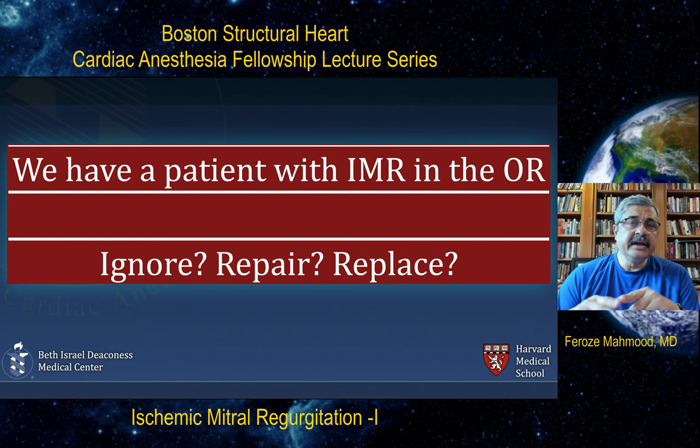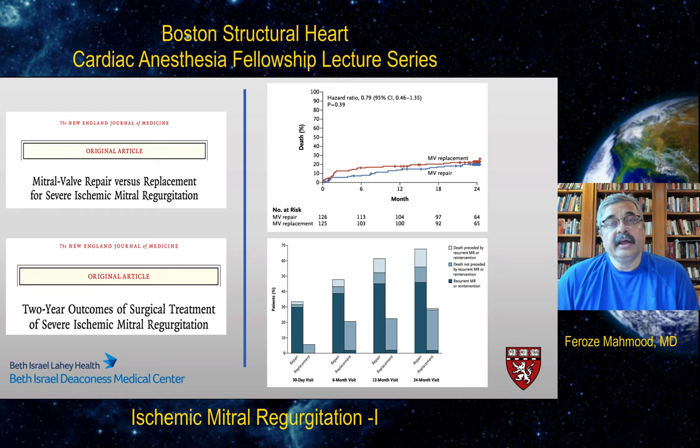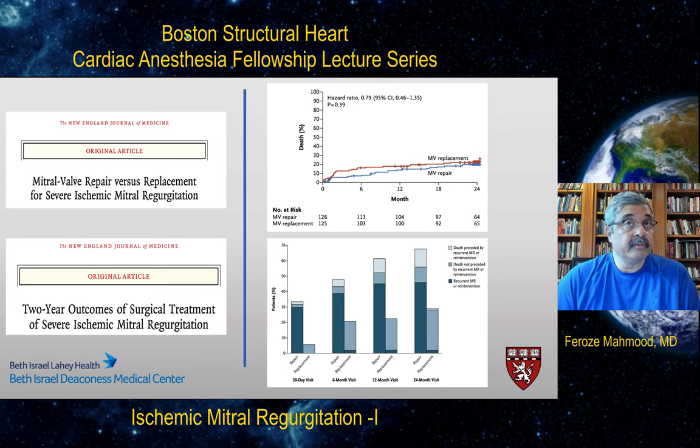This longstanding clinical conundrum was addressed in a trial of 250 patients in a multicentric, randomized fashion — patients equally matched as far as severity of coronary artery disease and severity of mitral regurgitation — to undergo repair or replacement. The initial trial reported short-term 30-day outcomes according to the STS database, and later a two-year outcome of surgical treatment options, either repair or replacement, between these 250 patients.